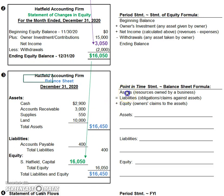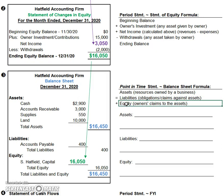Assets are defined as the resources owned by the business. Whereas liabilities are the claims or obligations against those assets — these are debts, liabilities, obligations. And finally, equity is the owner's claims to the assets. In other words, the assets minus the liabilities is what is the owner's share of those assets.